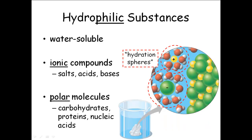Anything that is hydrophilic likes water. These are things that can dissolve in water — they're called water soluble. Any ionic compound, anything that's joined together with ionic bonds — remember, an ionic bond is strong as long as it's in a dry condition, but if you put salt in water, it comes apart and dissolves. Ionic bonds can be broken by water molecules, so any ionic compound can dissolve in water. Any molecule that is polar — like glucose — will also dissolve in water because some of those bonds are polar covalent bonds. So ionic molecules and polar molecules are water soluble or hydrophilic.